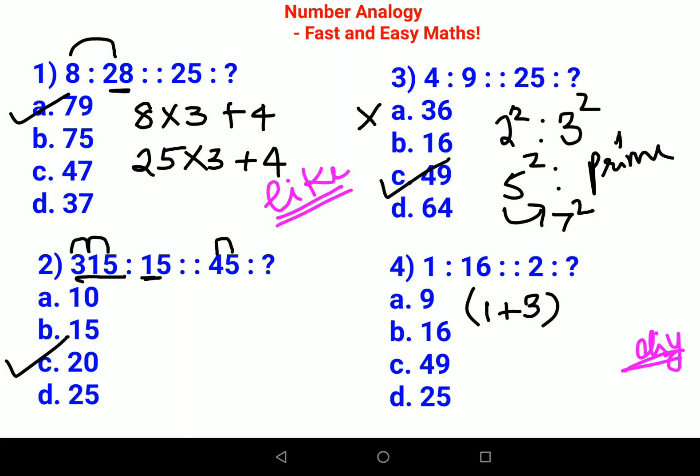So 1 plus 3 then you put a square. So similarly 2 plus 3 and then you take a square. So 2 plus 3 is 5 and 5 square is 25. So option D is our answer.